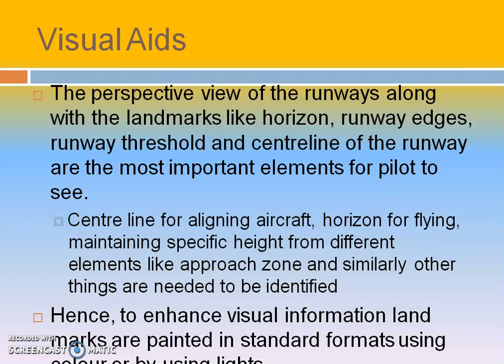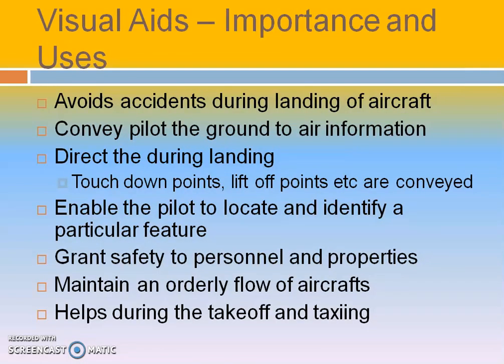To enhance all these, we mark the runways, taxiways, and apron by means of paints using some colors, or we can use some lights. This is provided to avoid accidents, to convey the pilot about the ground information, and to locate a particular place — whether it is a threshold line or the edge line — so the pilot will be able to understand. It also provides safety to both persons and property, and to maintain orderly flow of traffic and safe landing and take-off.